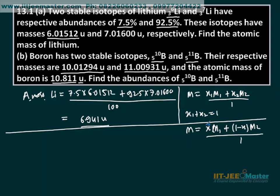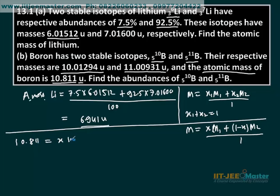So we basically need to find x. If we get x, we get the fraction, and from the fraction we can find the percentage value. So: the atomic mass of boron is given as m = 10.811, which equals x × 10.01294 plus (1 minus x) × 11.00931.